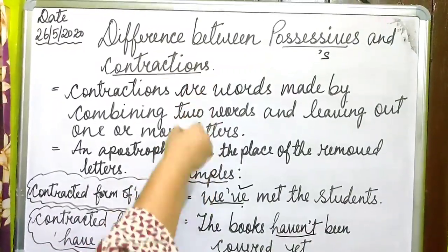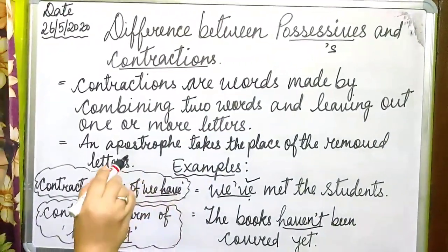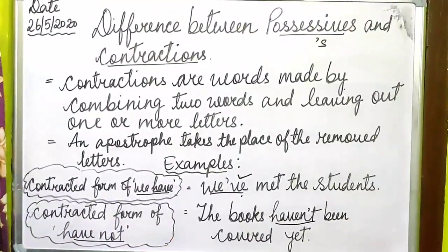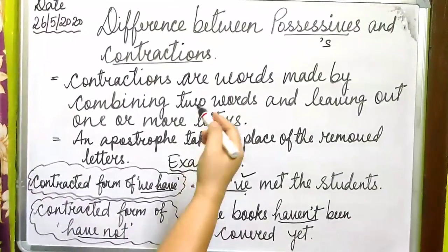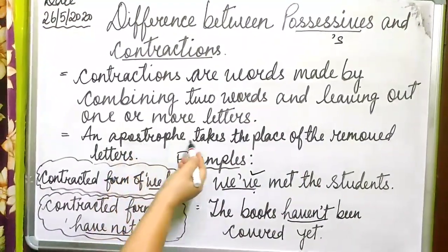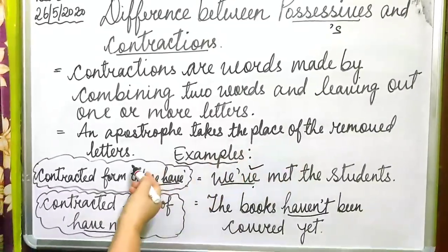Please read the textbook, children — you will know everything because it is written very clearly. The apostrophe takes the place of the removed letters — everything is there. You just read the textbook and learn.